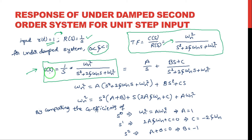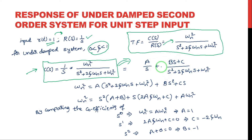This is the output equation in the s-domain. To apply the inverse Laplace transform, we first split the equation using the partial fractions method. By taking partial fractions, it becomes A/s plus (Bs + C) divided by the second order equation (s² + 2ζωns + ωn²). Taking the LCM, we equate the numerators on left and right sides to find A, B, and C values. The left side numerator is ωn².